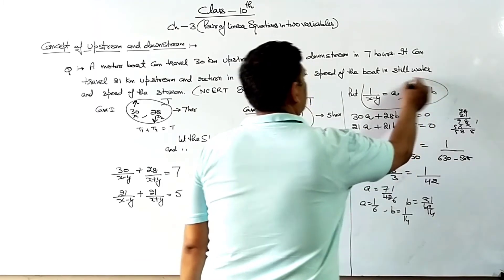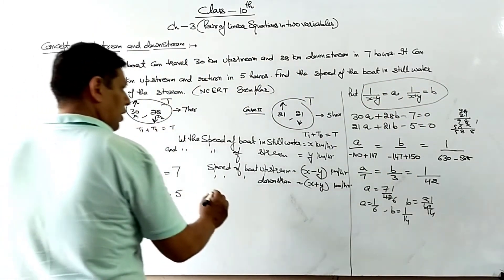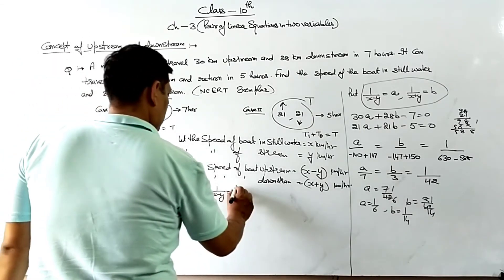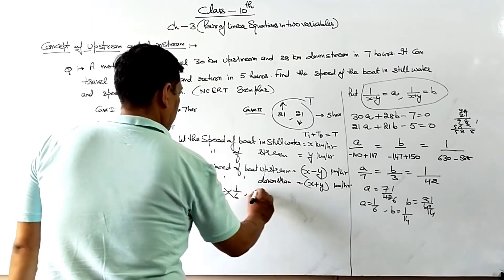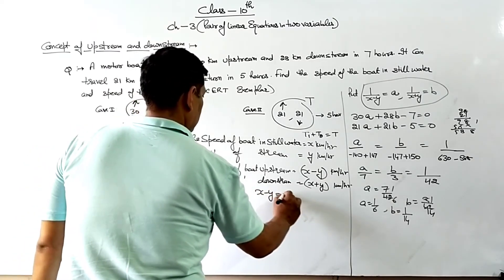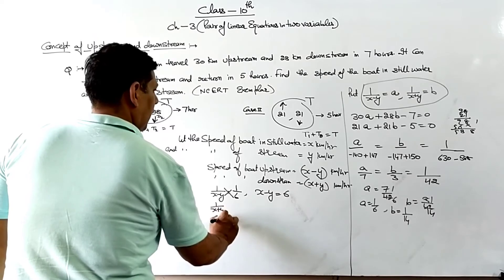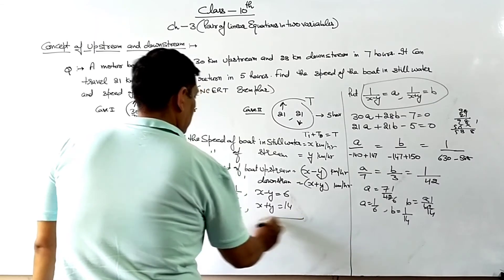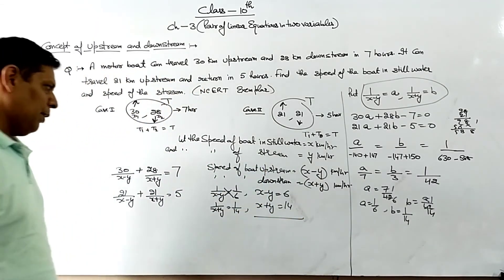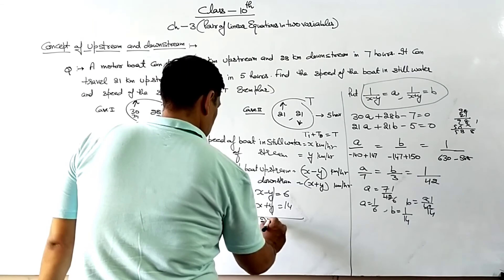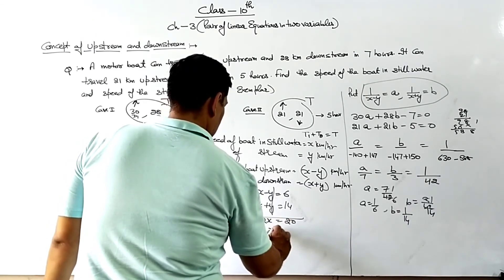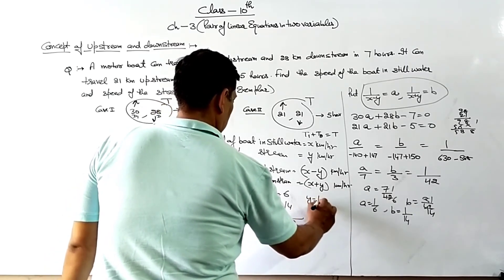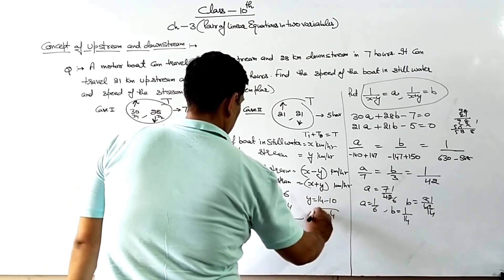Now we put these values back in terms of x and y. So 1 upon (x minus y) equals 1 by 6 means x minus y equals 6. And 1 upon (x plus y) equals 1 by 14 means x plus y equals 14. Now using the elimination method, adding both equations: 2x equals 20, so x equals 10. Putting x equals 10: y equals 14 minus 10, so y equals 4.